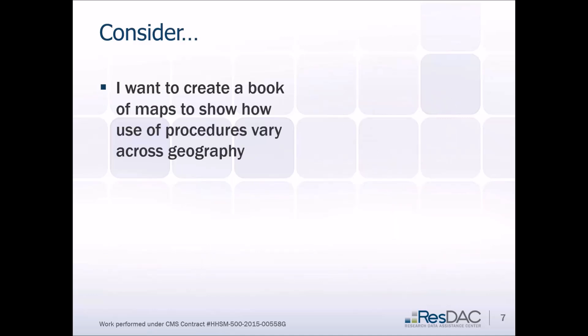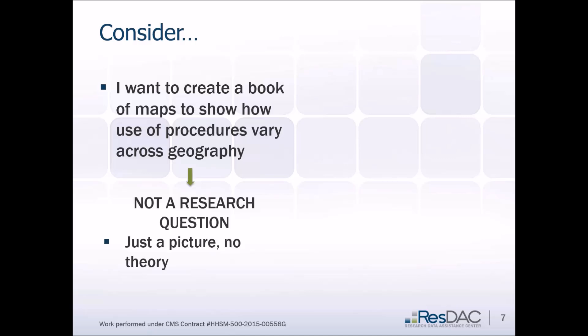Finally, consider the following: I want to create a book of maps to show how use of procedures varies across geography. Chart books can be very useful and we often get considerable insights from them. But the chart book itself — the map book — is not a research question. We're just creating pictures describing things at a point in time. There is no theory, no associations, and no stated goal of generalizable knowledge beyond what is shown in those maps.